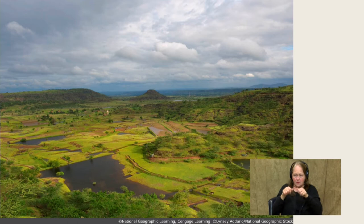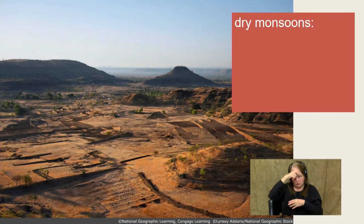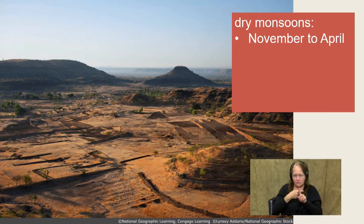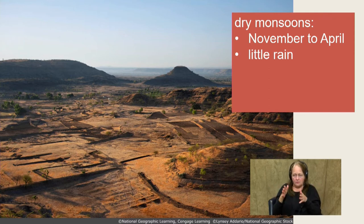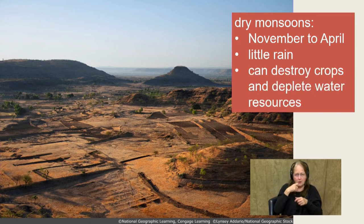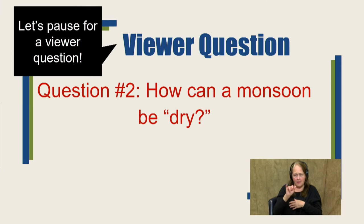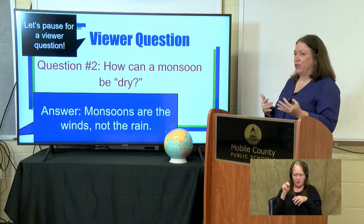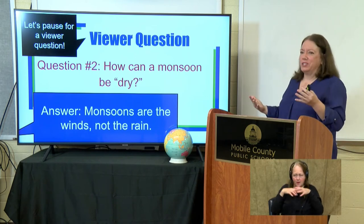Life continues to go on in South Asia, and monsoons are incorporated into their daily life. Dry monsoons are typically November to April, where little rain is falling and winds blow from the Himalayas south. A dry monsoon can really destroy crops and deplete water resources. Technically, the monsoon is the wind and not the rain, so a monsoon can be wet or dry. When we say 'it's raining like a monsoon outside,' we're technically thinking of the wet monsoon.